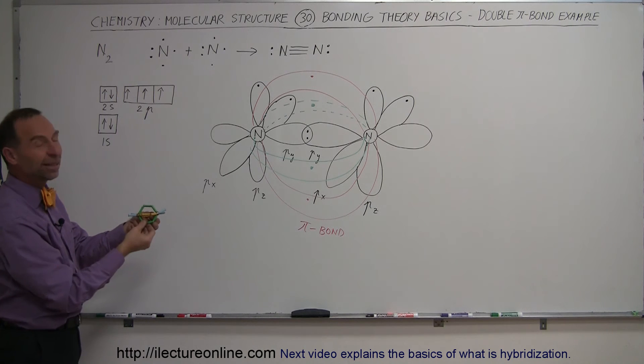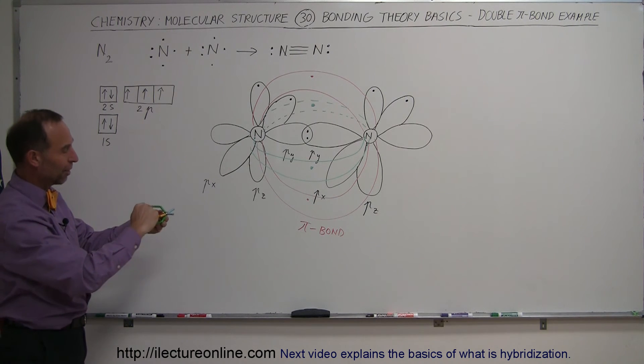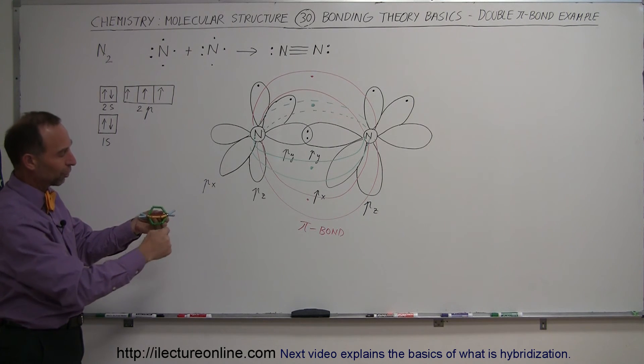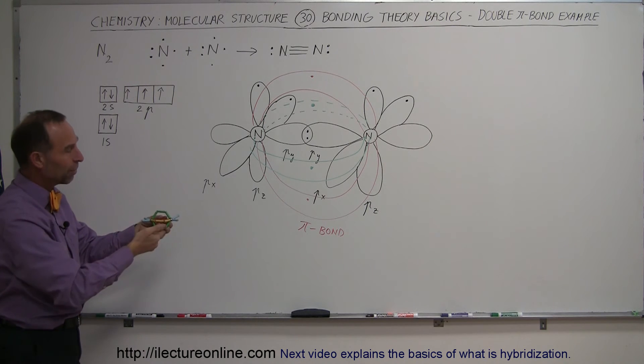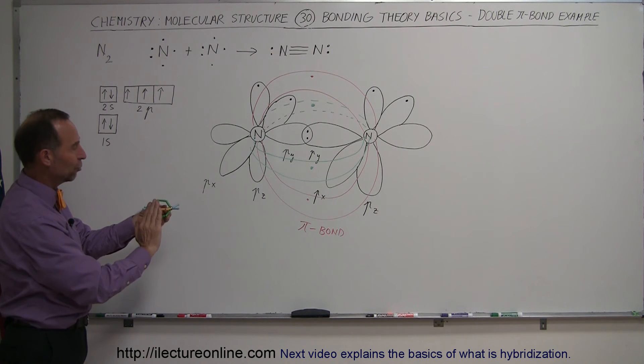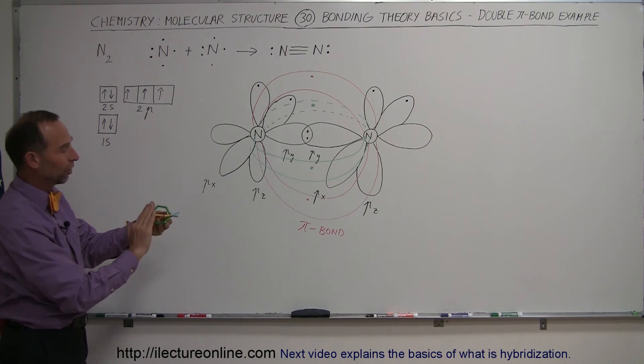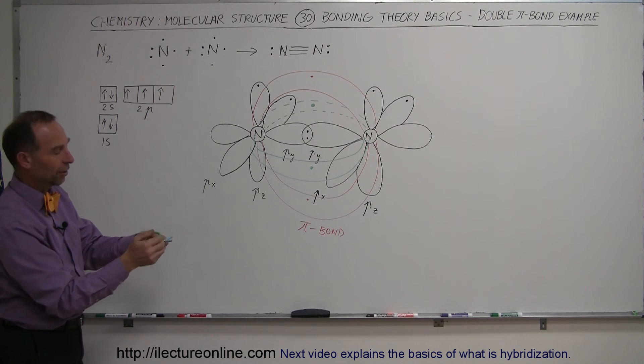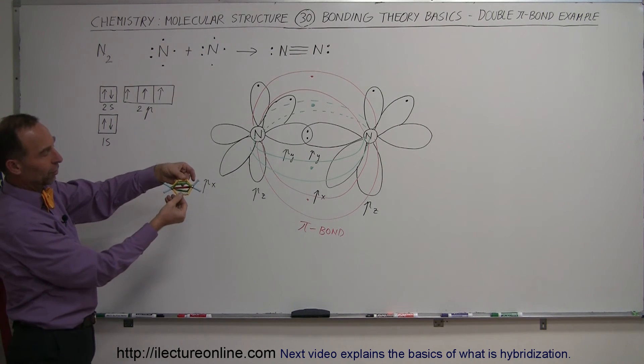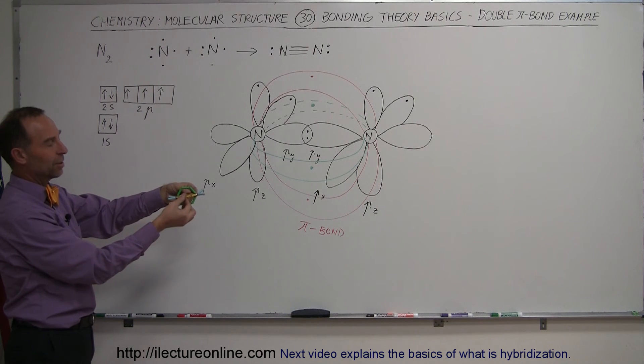And then we have - I guess I didn't use the same colors I used on the board - but here are the two z orbitals joining together above and below the molecule. And here we have the two px orbitals joining together in front and behind the molecule. So you can see what that looks like in 3D.